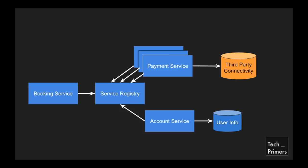With client-side load balancing, the booking service directly chooses which service to hit. The booking service gets all the information back from the service registry about the payment service — saying there are three instances of payment service running on these nodes at these ports. The booking service then chooses one of the instances and hits that particular application. It retrieves the data from the service registry and directly hits only one of the payment service instances.